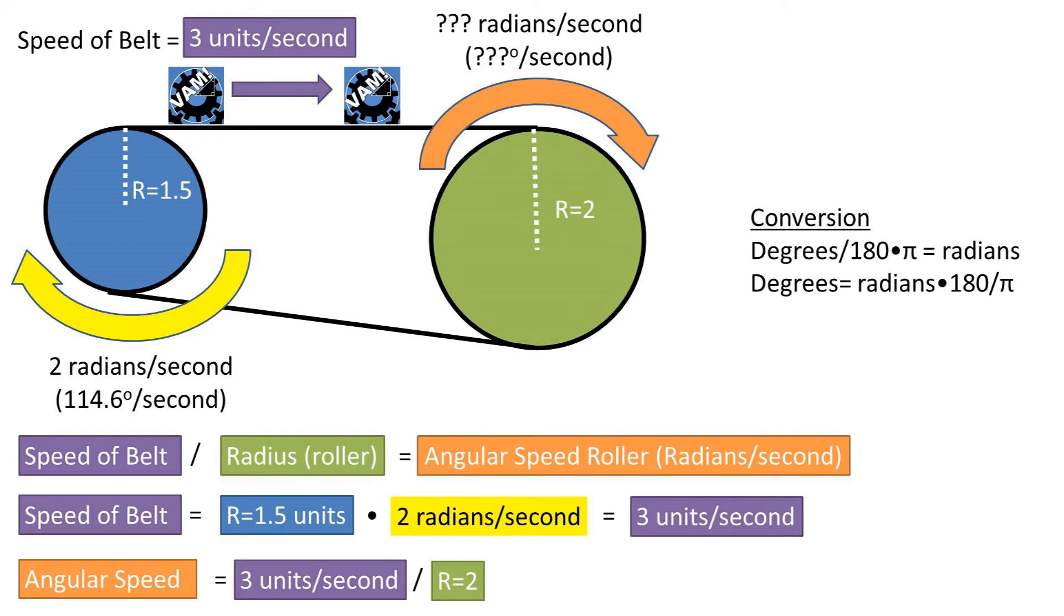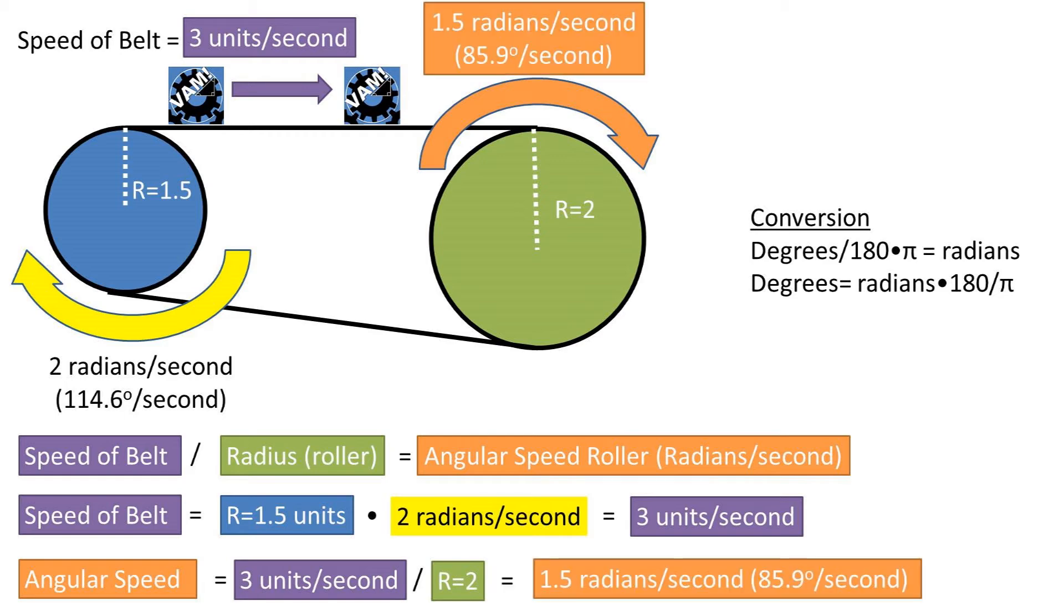Now to get the angular speed of the second roller, we can rearrange the speed of the belt formula to solve for the angular speed. So the speed of the belt over the radius of the second roller equals the angular speed of the second roller. We get an angular speed of 1.5 radians per second for the second roller.